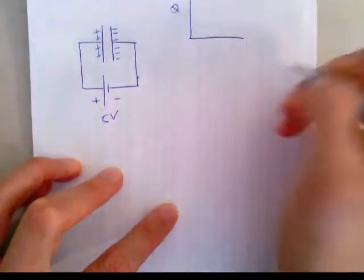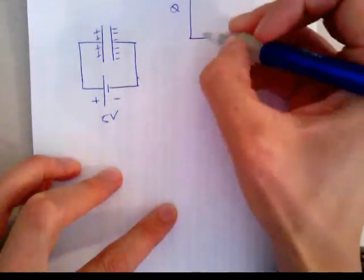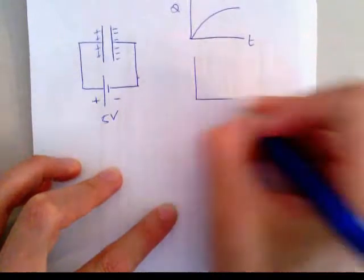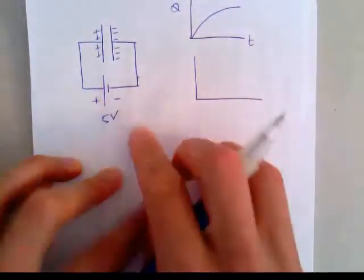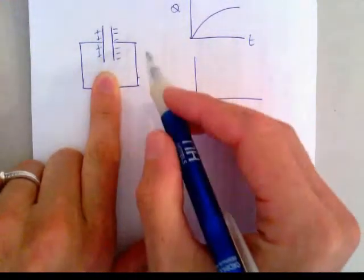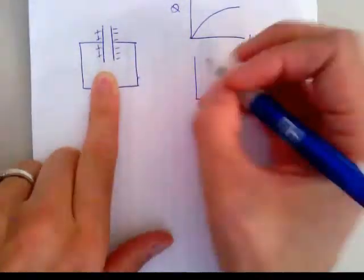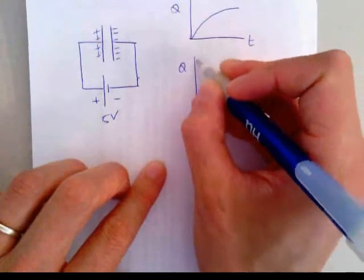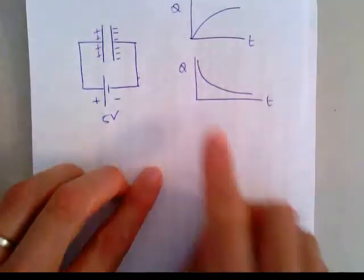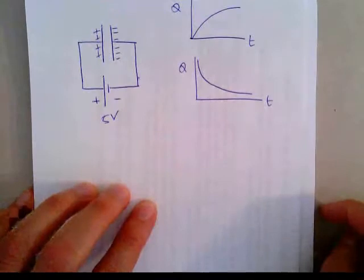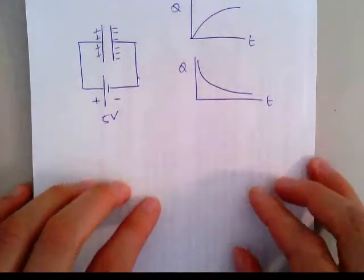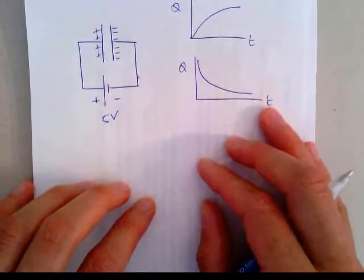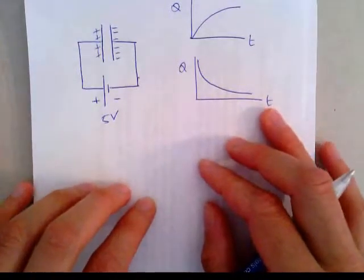If you were to plot charge built up on the capacitor versus time, it builds up like this. And then if you disconnect the battery and take it away from the circuit, eventually the charge will leak away from the capacitor, following an exponential relationship. So the charge reduces with time — this takes a finite time. It's this finite amount of time that gives a capacitor quite interesting properties for filters.